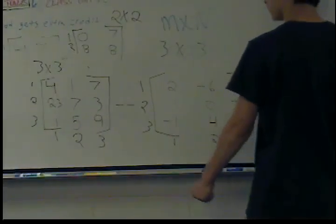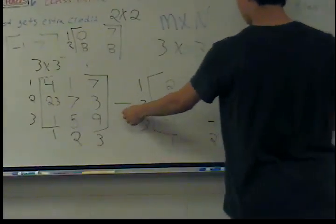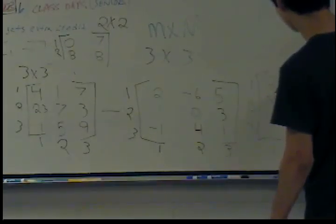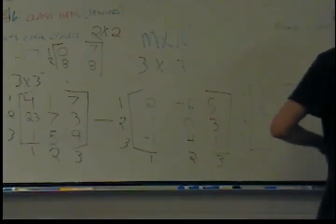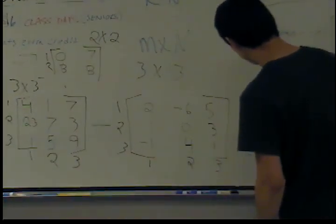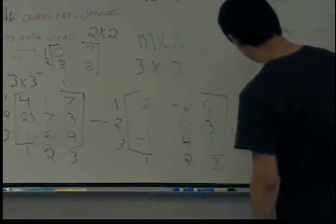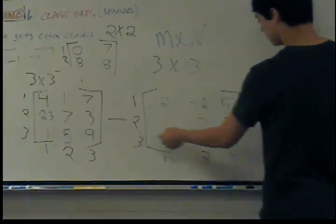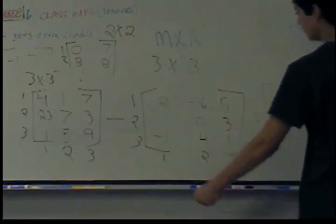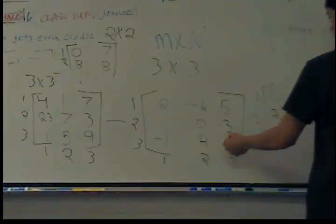7 minus 5 is 2. And then we go again. 23 minus 1, 22. 7 minus 0. 7. 3 minus 3. 0.